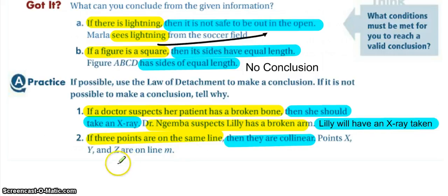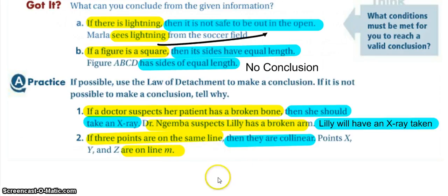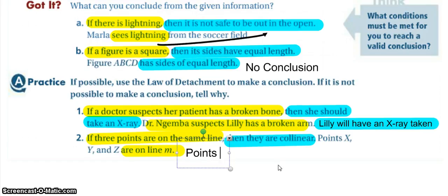When we look at situation two: if three points are on the same line, that is our hypothesis; then they are collinear, is our conclusion. Points X, Y, and Z are on line M, so that makes them on the same line, which satisfies our hypothesis, which means we satisfy our conclusion. So we can say that points X, Y, and Z are collinear.